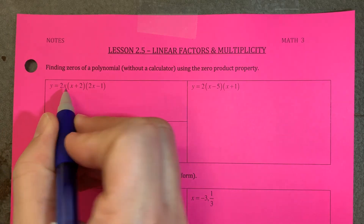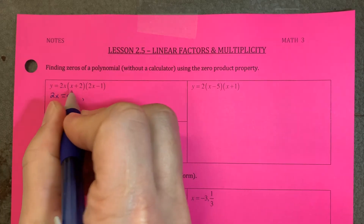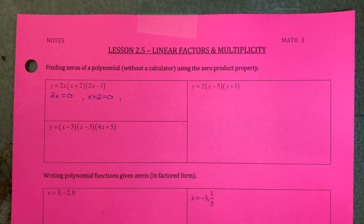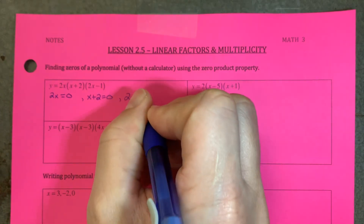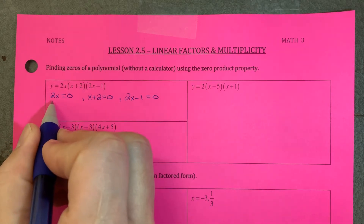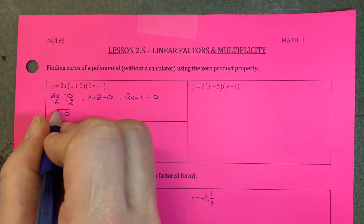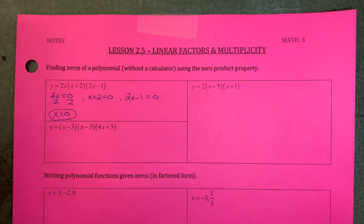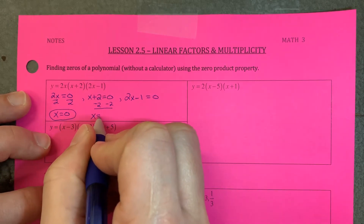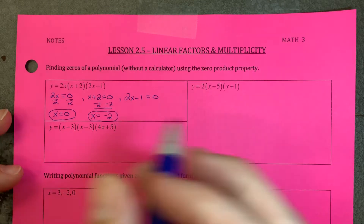I'm going to take the first expression, 2x, and set that equal to 0. Then take the next expression, x plus 2, set that equal to 0. And the last one, 2x minus 1, set that equal to 0, and then solve all three. For the first one, I divide by 2 and get x equals 0 — there's one zero. For the second, subtract 2 from both sides, giving x equals negative 2 — there's another zero.